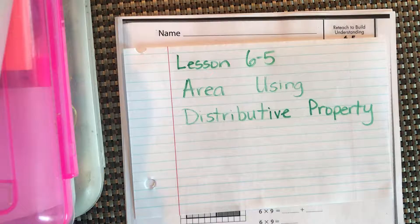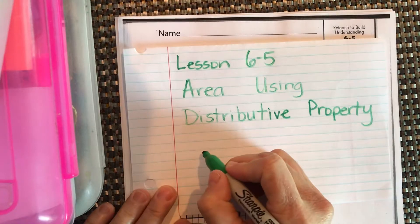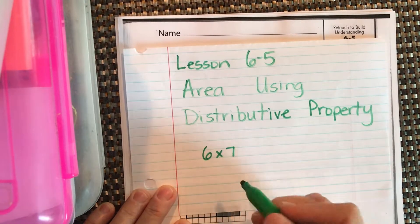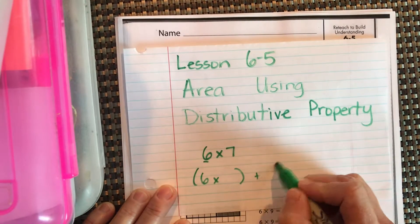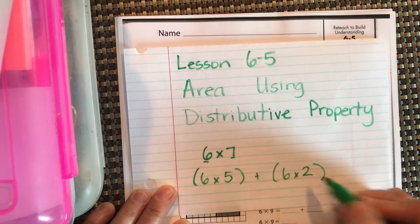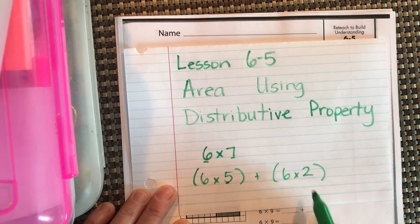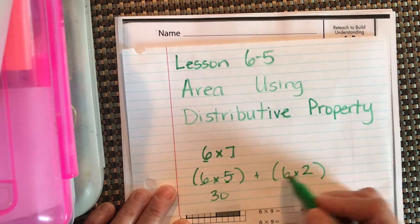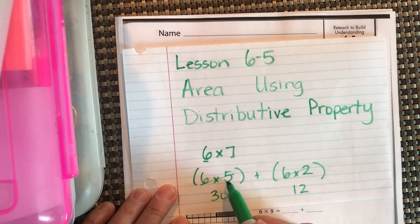Lesson 6-5: calculating area using the distributive property. We know the distributive property for multiplication — if we have six times seven and we decide to keep the six the same and break the seven up into five and two, because it's always easier to multiply by five and then by two, we get 30 and 12.